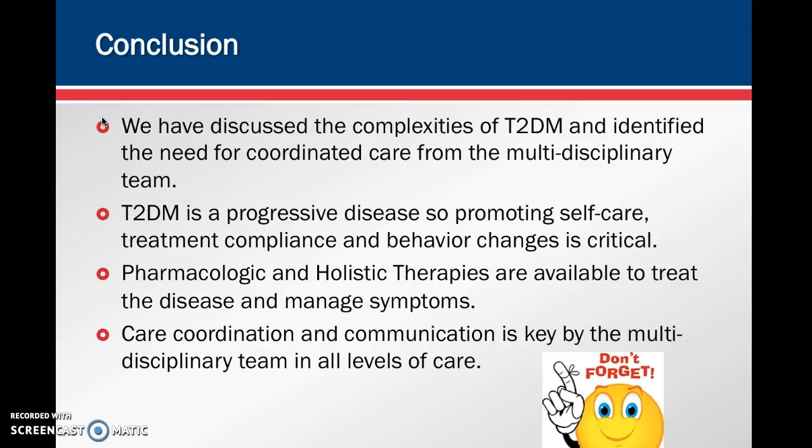In conclusion, we have discussed the complexities of the type 2 diabetic patient and identified the need for coordinated care from the multidisciplinary team. Type 2 diabetes is a progressive disease, so promoting self-care, treatment compliance, and behavior changes is critical. Pharmacologic and holistic therapies are available to treat the disease and manage symptoms. Care coordination and communication are key at all levels of care — inpatient, outpatient, or extended care facilities.